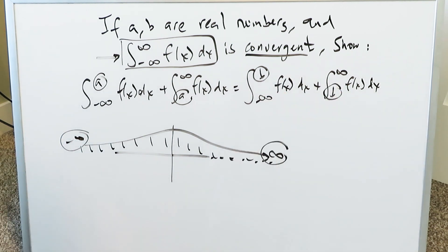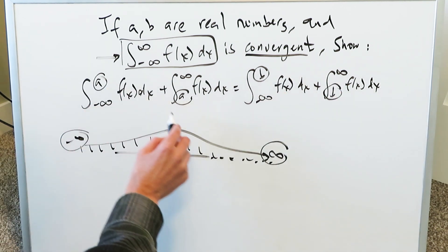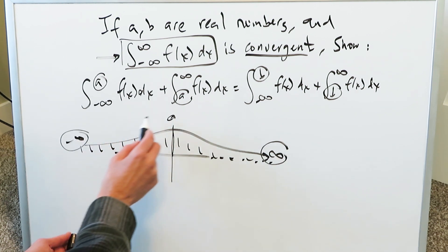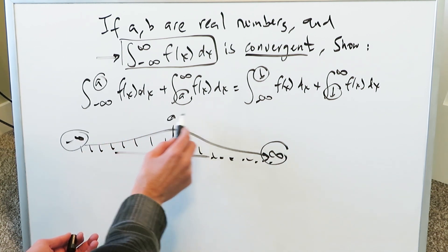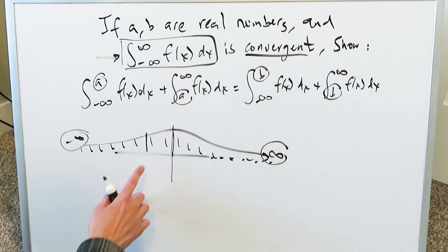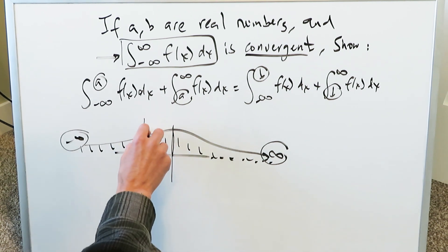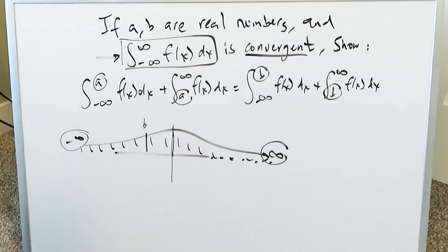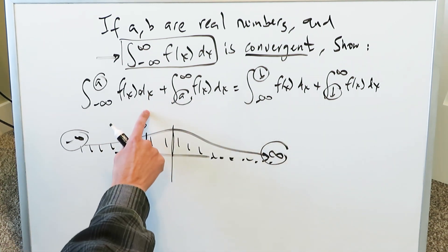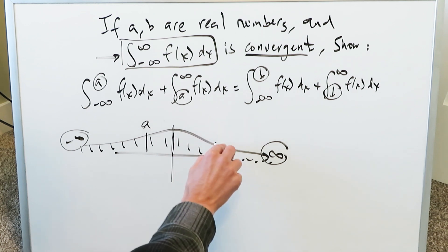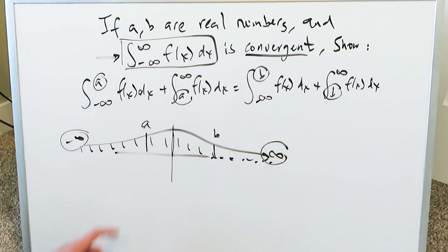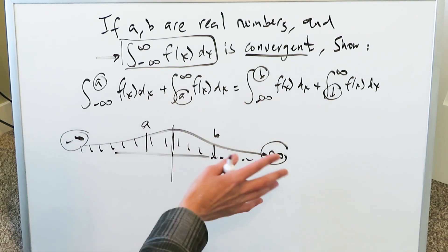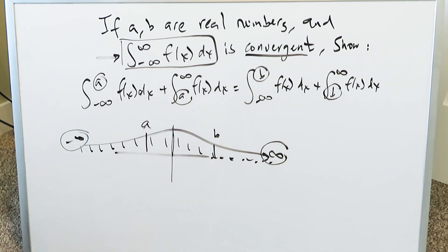The placement of a and b doesn't really mean anything too significant. A could very well be 0 — you could be doing minus infinity to 0, then 0 to infinity. B could be any negative or positive number — you'd do minus infinity to b, then b to positive infinity. The point is that the placement of a and b doesn't affect anything, because each of these limits are shared across their intervals, and everything works out in terms of convergence.